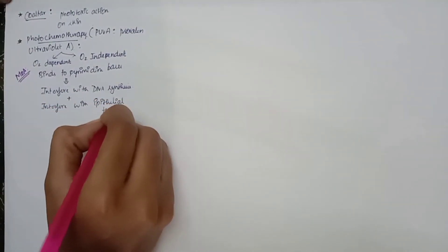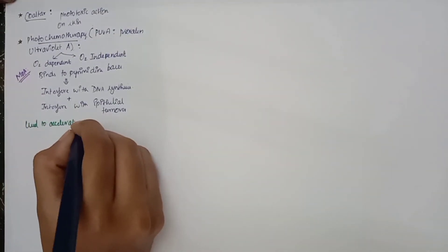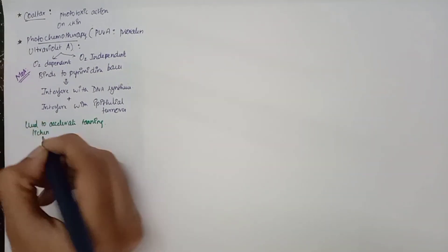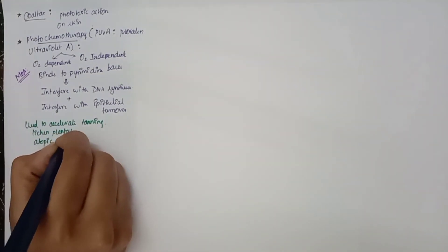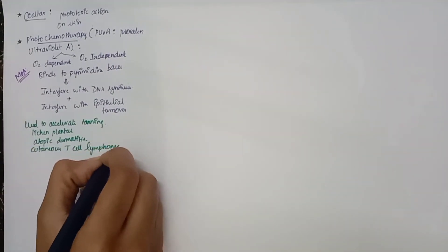It provides phototoxic action on skin. The next one is photochemotherapy PUVA, that is psoralen ultraviolet A. What we have to note here is this chemotherapy has both oxygen dependent and oxygen independent reactions. The mechanism of action is it binds to the pyrimidine bases and thus interferes with DNA synthesis and also interferes with epidermal turnover. The uses of photochemotherapy are it is used to accelerate tanning in lichen planus, in atopic dermatitis, and in cutaneous T-cell lymphoma.